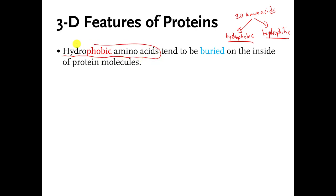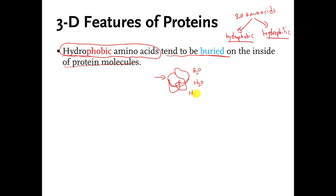The amino acids that are hydrophobic, as a rule, they tend to be buried on the inside of protein molecules. So here's a pretend folded-up protein molecule. If this molecule is bouncing around in your cell, that molecule is mostly surrounded by water molecules. But some of the amino acids in this molecule don't like to mix with water — they are the hydrophobic amino acids — and as a rule, they tend to be buried on the inside of the protein molecules, away from the water.